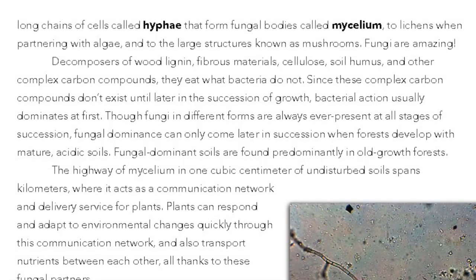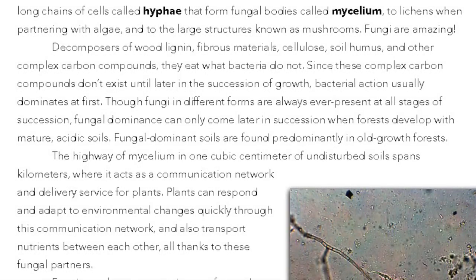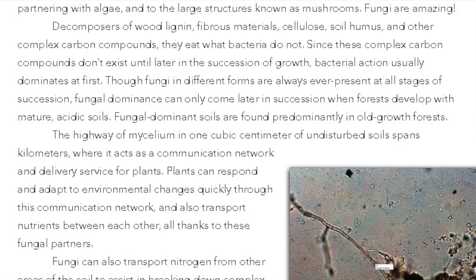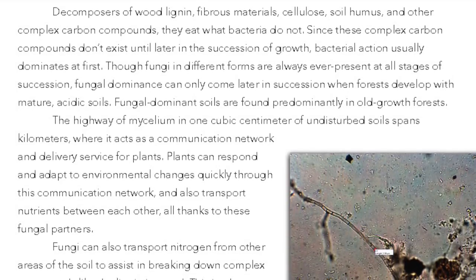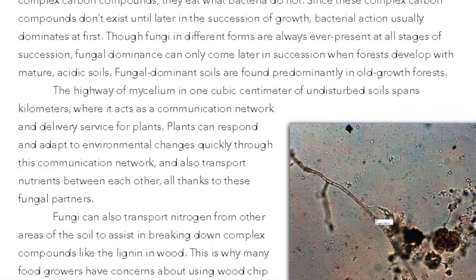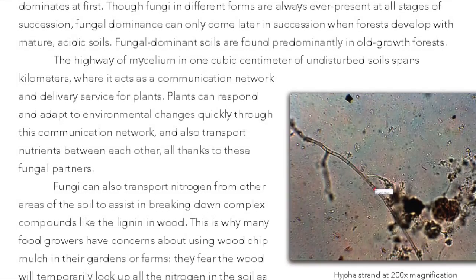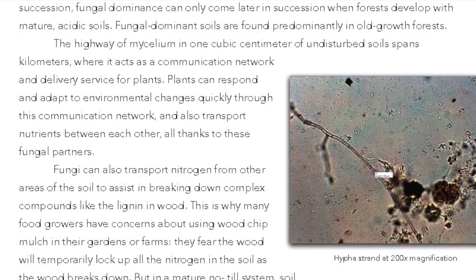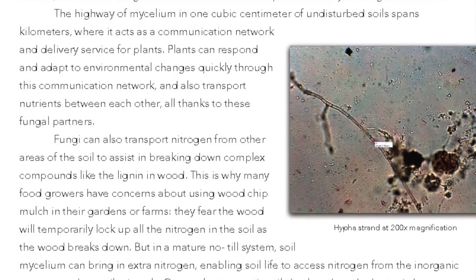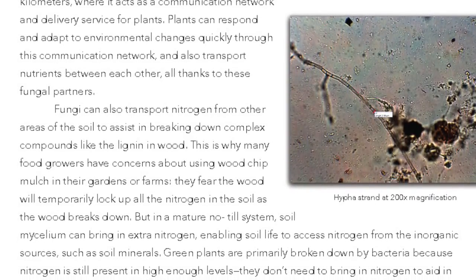Fungi are amazing decomposers of wood lignin, fibrous materials, cellulose, soil humus, and other complex carbon compounds — they eat what bacteria do not. Since these complex carbon compounds don't exist until later in succession of growth, bacterial action usually dominates at first, though fungi in different forms are always ever-present at all stages of succession. Fungal dominance can only come later in succession when forests develop with mature acidic soils. Fungal dominant soils are found predominantly in old-growth forests. The highway of mycelium in one cubic centimeter of undisturbed soil spans kilometers, where it acts as a communication network and delivery service for plants. Plants can respond and adapt to environmental changes quickly through this communication network and also transport nutrients between each other, all thanks to these fungal partners. Fungi can also transport nitrogen from other areas of the soil to assist in breaking down complex compounds, like the lignin in wood.